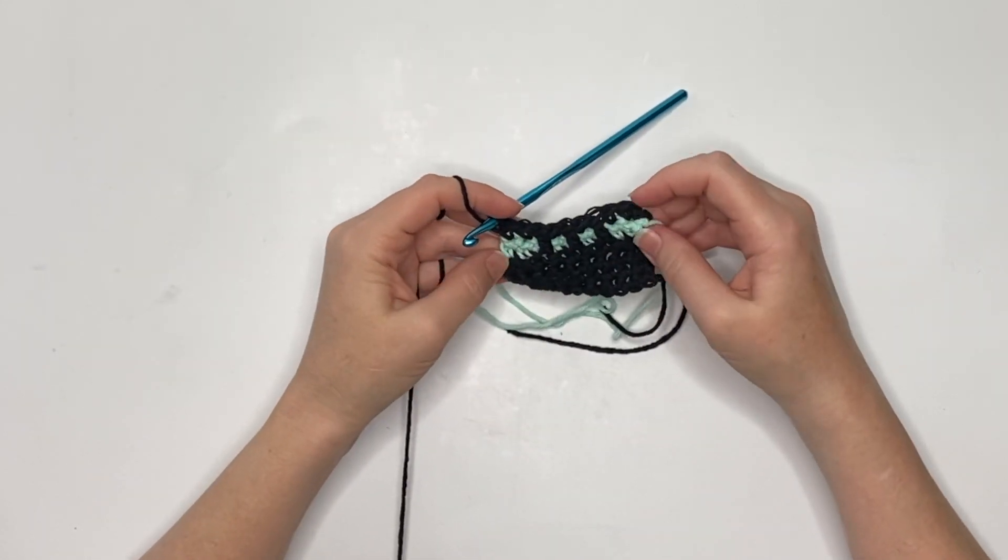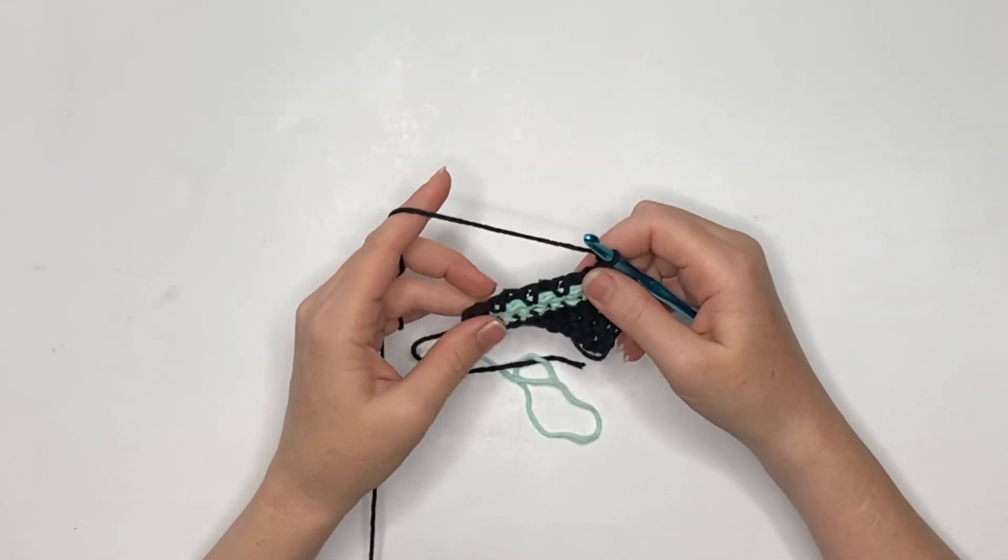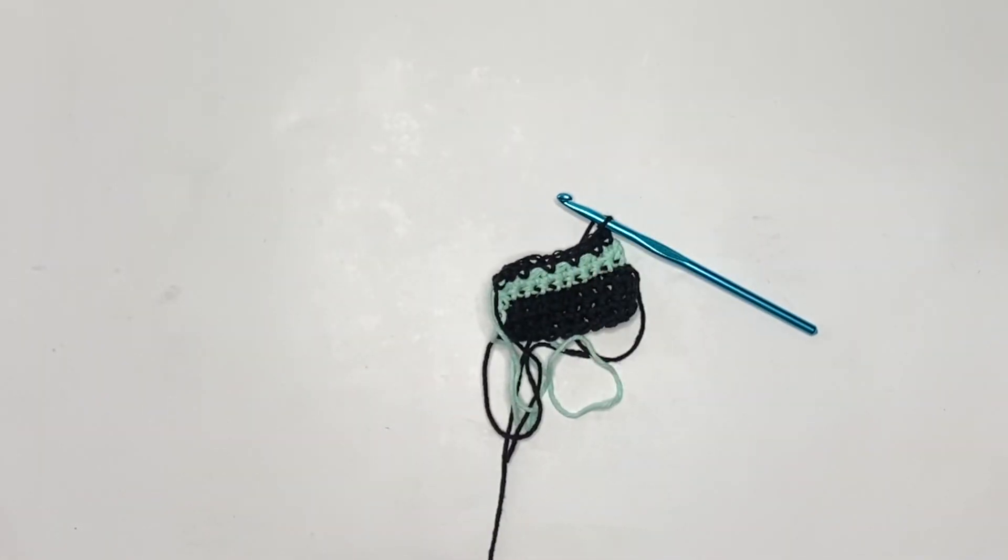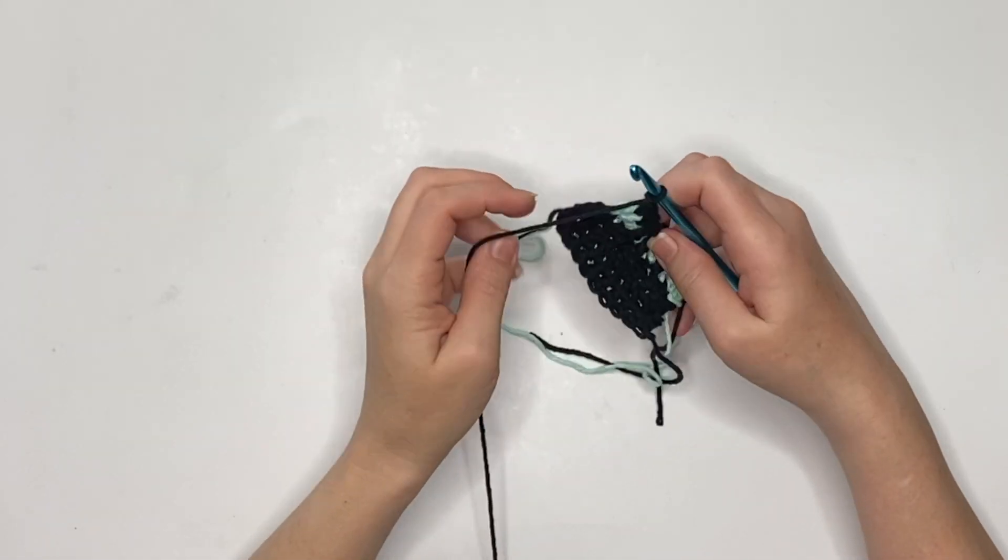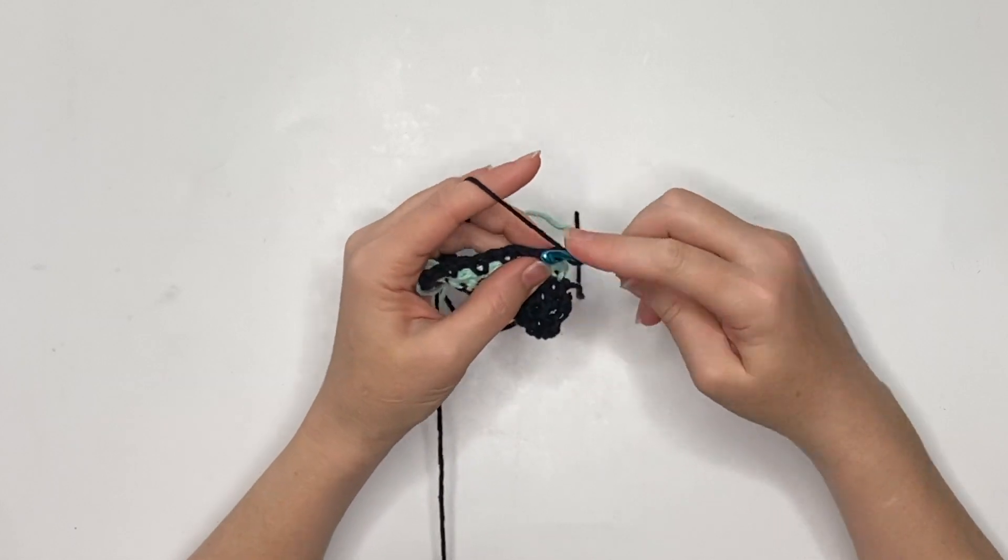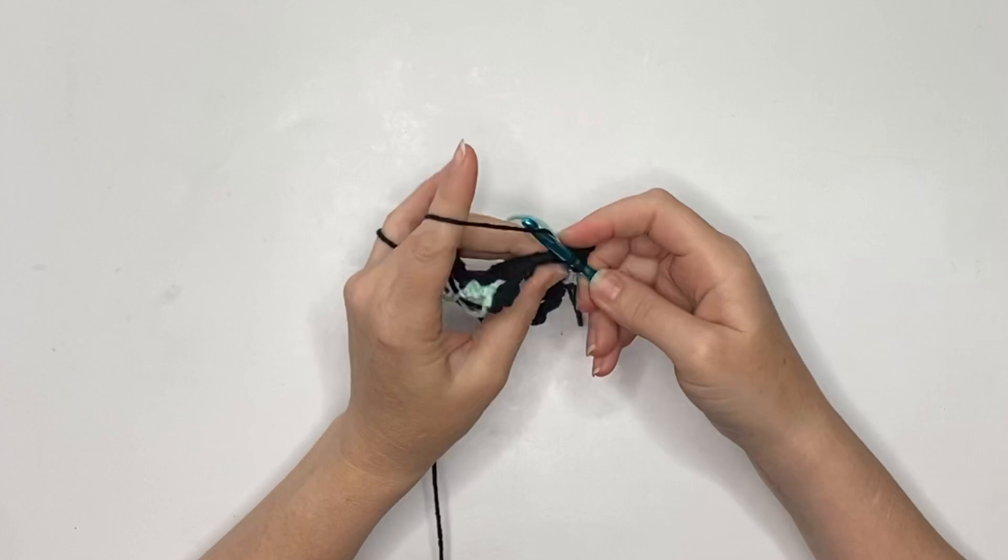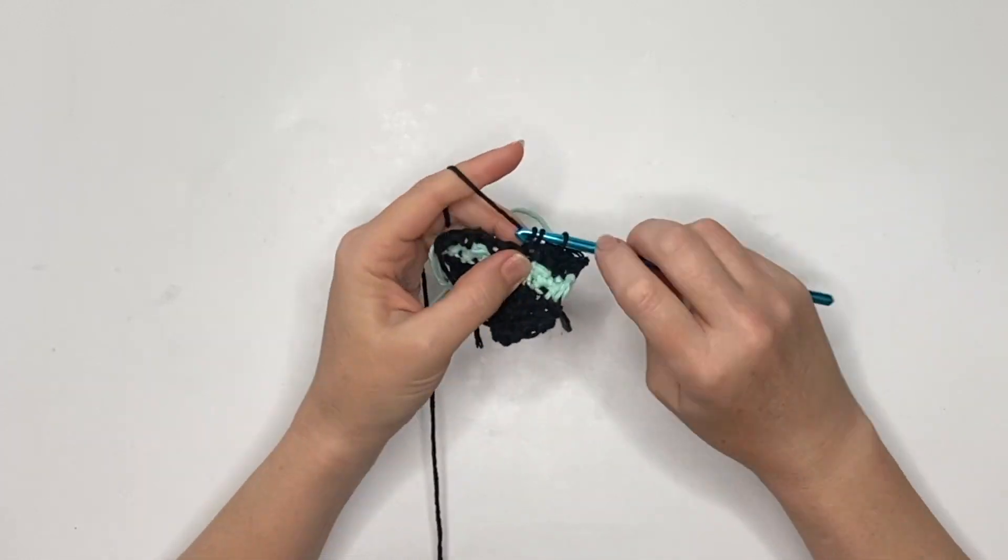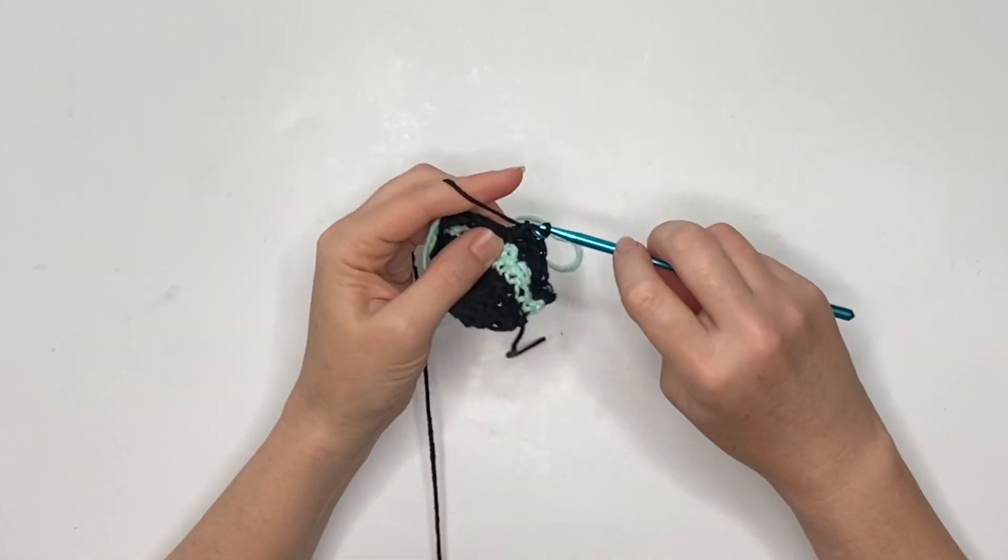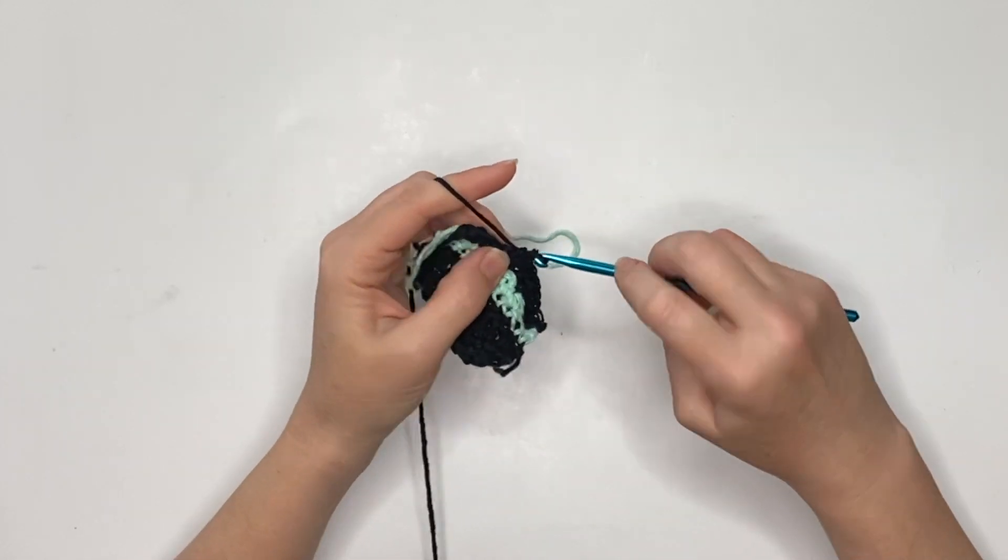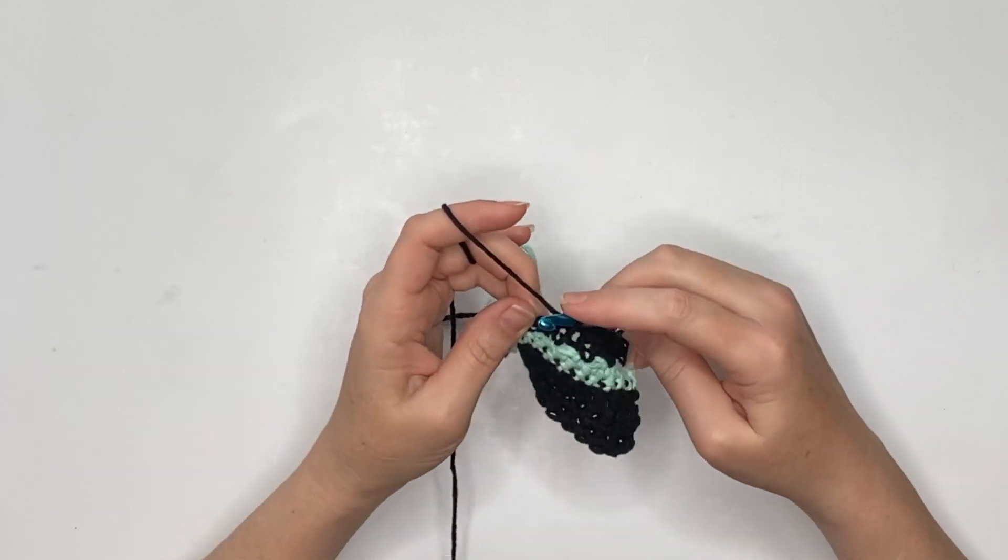Once we finish this row, you can see that's the pattern, very simple. We'll just chain one and turn our work. You can see that it's just straight across on the back and then on the front side has that little pattern. Now we're just going to continue on with our color A and repeat that row two through four where you chain one and then single crochet nine across for that large chunk of black in the center of our coaster.